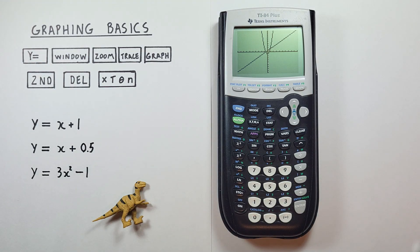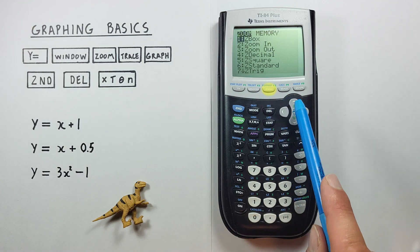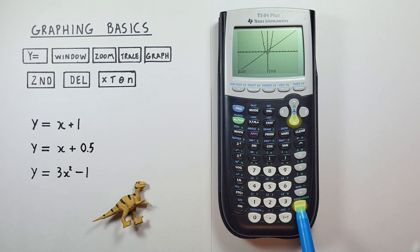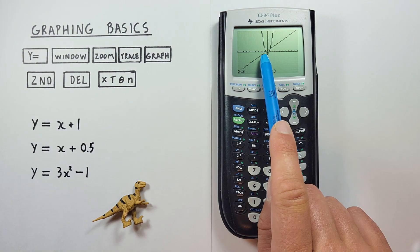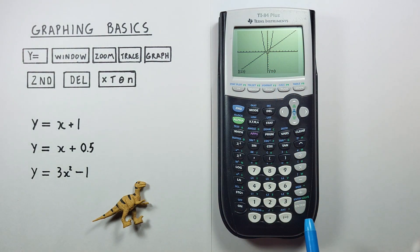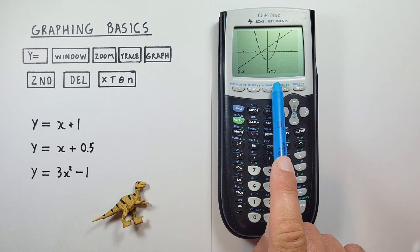If we want to zoom in so that we can see them a little better, all we do is press zoom, scroll down to zoom in, select it. We default to 0,0 — that works for us — so we just hit enter. And there's a better view of our two functions.